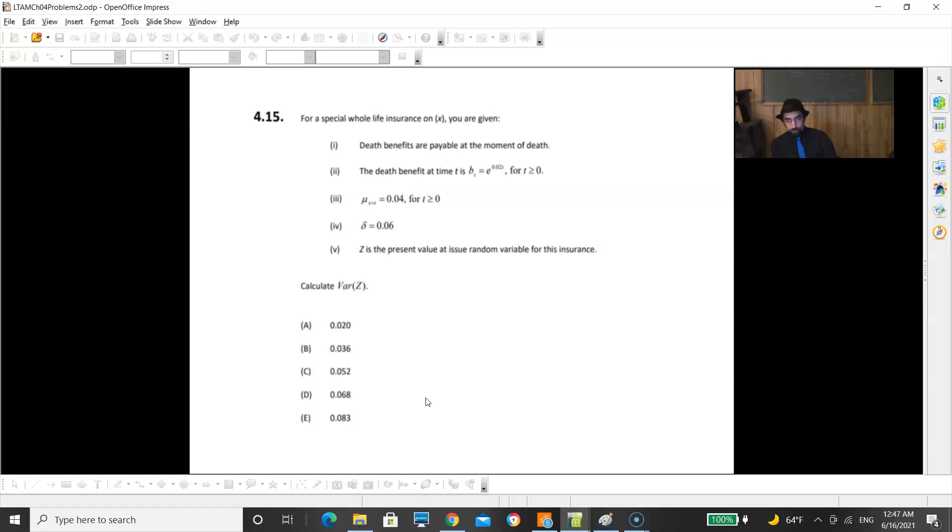And last one on this bunch. For a special whole life insurance on the next year old, you're given death benefits are payable at the moment of death. Death benefit at time t is e to the 0.02t. Force of mortality is the constant 0.04, so exponential survival curve. And constant force of interest. Z is present value of insurance. Calculate variance of Z.